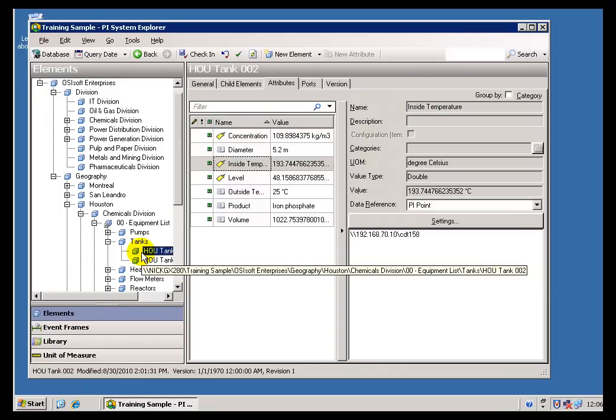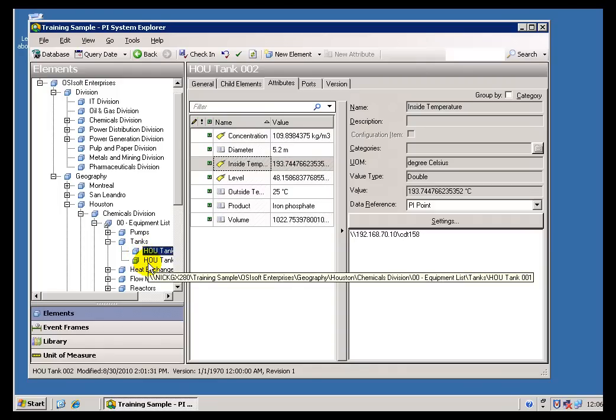The way I like to think about it is when you have a GPS that takes you to certain addresses, well, the GPS is not the restaurant you're trying to go to, just like AF is not the PI data that you're trying to look at. AF will take you to that PI data, but it's not the data itself. That's why they're stored in completely separate areas here.